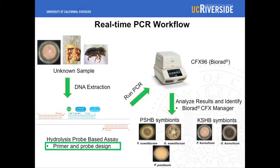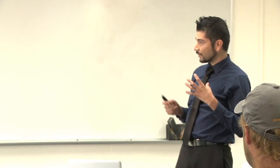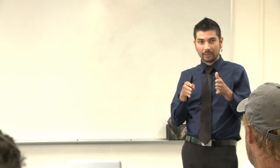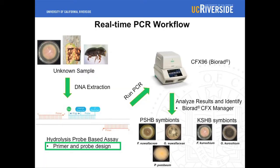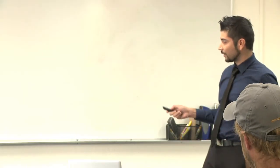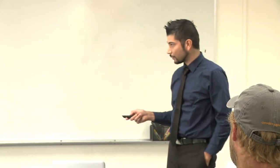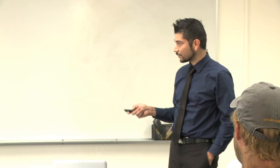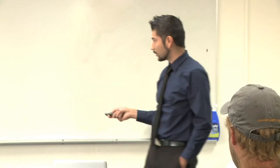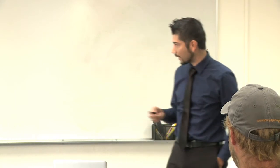The whole workflow is: you obtain an unknown sample from the field or the lab — this can be pure culture fungi, a sample that appears to be attacked, or if you have the beetle, we can try that too. You do DNA extraction from these sample types and use this hydrolysis probe-based assay. Basically, this is a probe sequence that is specific to the species of fungi we're targeting. Once we run the PCR, this machine has a detection method — once the probe binds to one of these targets, it releases a fluorescent signal. After analyzing the results, we can see whether we have the symbionts indicating polyphagous shot hole borer or Corotio shot hole borer.